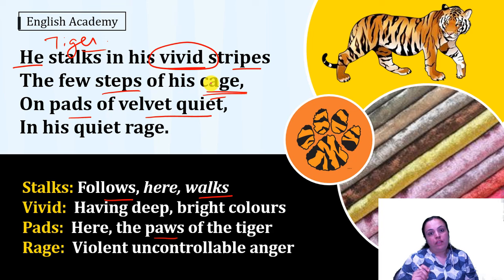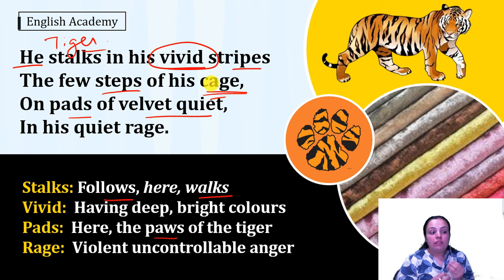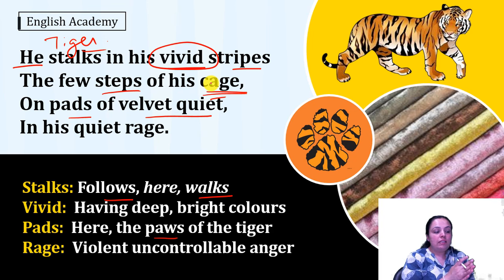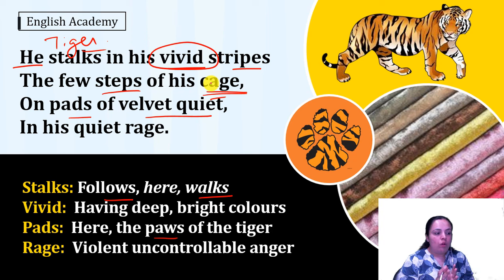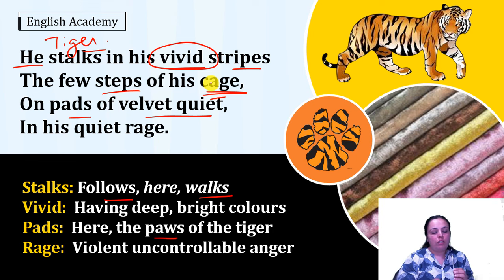In his quiet rage — quiet means absolutely no sound, while rage is violent uncontrollable anger that would normally produce the sound of roaring. The poet says the tiger is full of rage but now, confined in the cage, it is quiet and does not make any sound. So the tiger is closed in a small cage, keeps walking with its brightly colored yellow and black skin, and its noiseless paws make no sound at all as it walks inside.